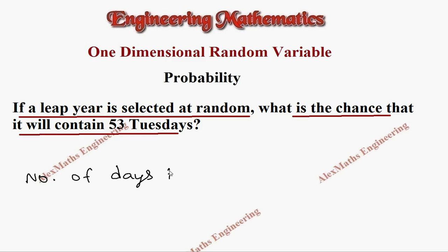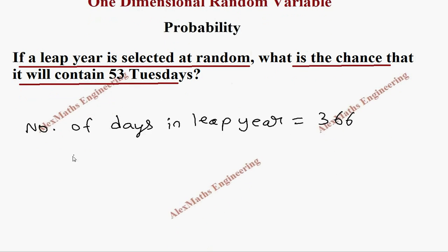In a leap year, the number of days is 366. And let's write the number of days in 52 weeks.